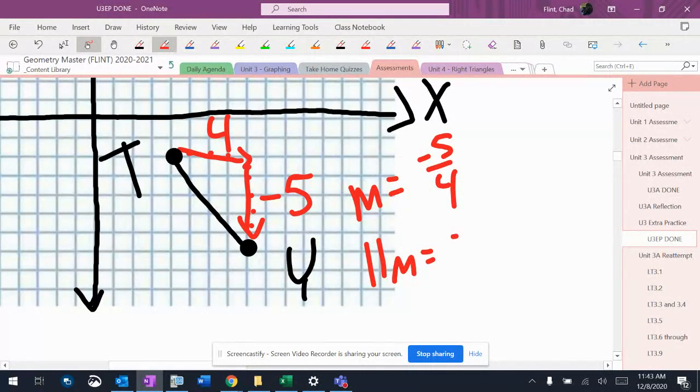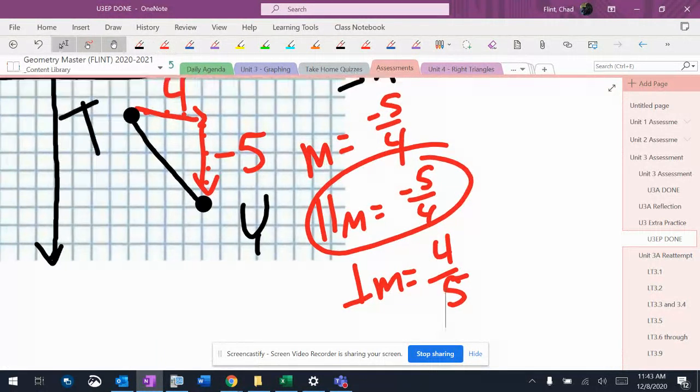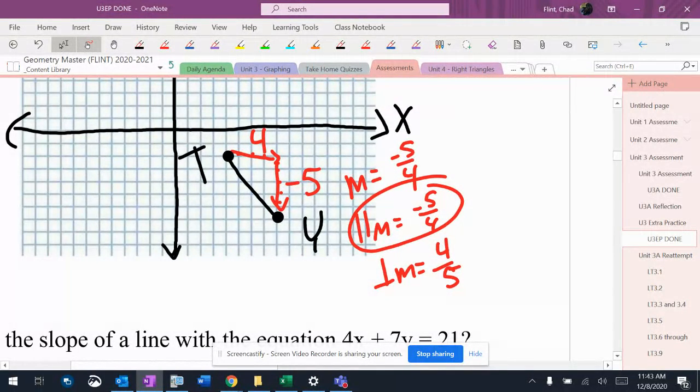Parallel slopes are exactly the same, so it's also negative 5 over 4. And just because, I'm going to put the perpendicular slope down too - flip it and change the sign, so it would need to be positive because the other fraction is negative. So we're looking for a parallel slope. Got to remember that we need to do the same.